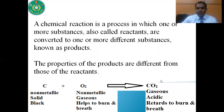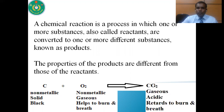So what are the properties of carbon dioxide? We know that carbon dioxide is a gaseous substance. When dissolved in water, it forms carbonic acid, so carbon dioxide is acidic in nature. It has another property to retard burning and breathing. So we can say that when reactants react with each other, they form a compound of new properties. This is chemical reaction.